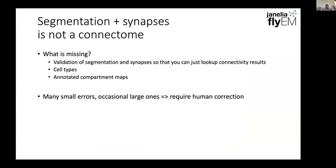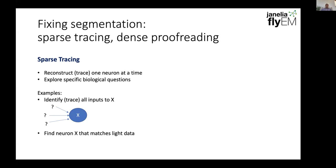There are still things that are missing — cell type annotation, compartment labeling, and the validation of segmentation. Segmentation errors are particularly problematic. Whereas synapse errors are somewhat statistical in nature — maybe a few errors here and there — with segmentation, a single error can merge two or three neurons together. The algorithm may glue multiple things incorrectly together, causing a major change in the graph and producing incorrect data, requiring human correction. There are a couple of ways to fix segmentation.